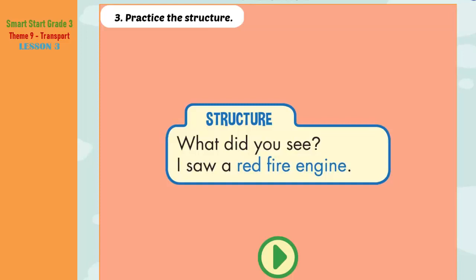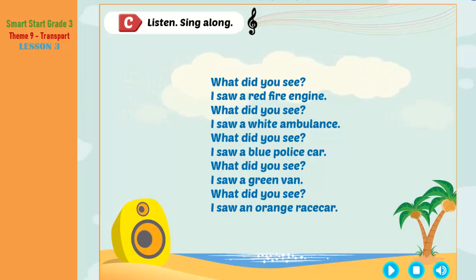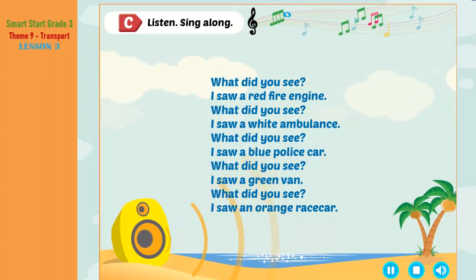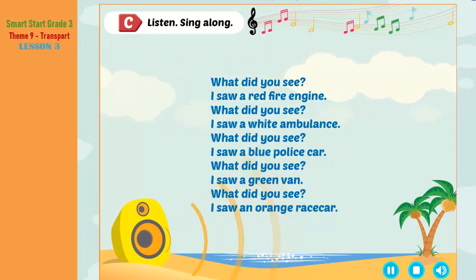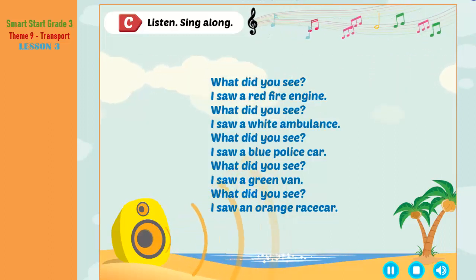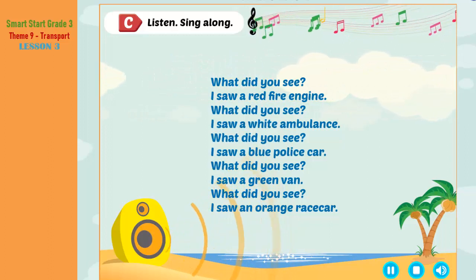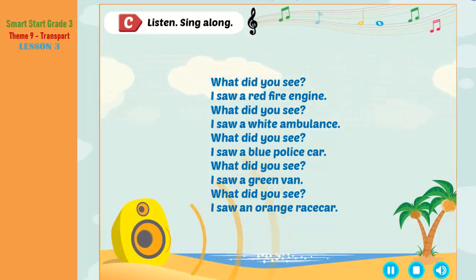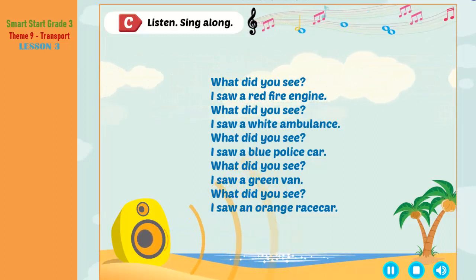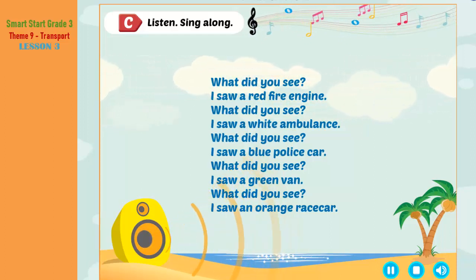B. Three. Practice the structure. What did you see? I saw a red fire engine. What did you see? I saw a red fire engine. What did you see? I saw a white ambulance. What did you see? I saw a blue police car. What did you see? I saw a green van. What did you see? I saw an orange race car.